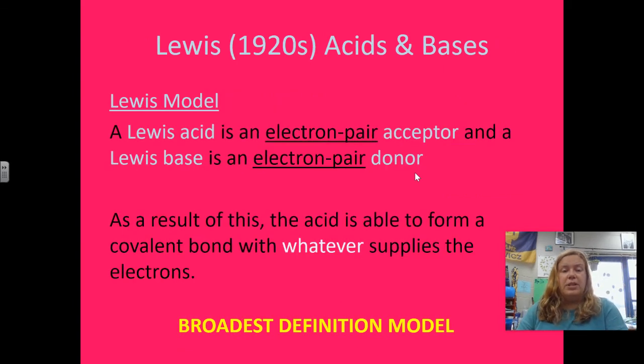The next type of model was in the early 1920s, and this was from the Lewis model. If you think about a Lewis structure, Lewis structure talks about electrons, so that kind of makes the connection. A Lewis acid is an electron pair acceptor, and a Lewis base is an electron pair donor. Notice we're looking at it from the electron perspective instead of the proton perspective, unlike the other two models. As a result of this, the acid is able to form a covalent bond with whatever supplies the electrons. That's a nice idea, and that works for some situations. However, this is the broadest definition model.